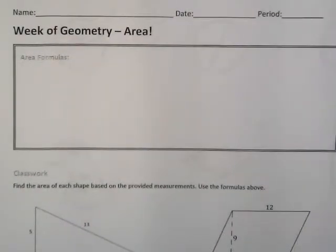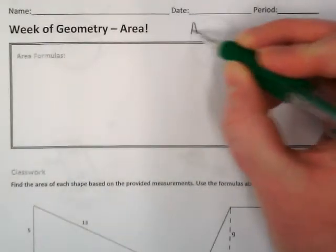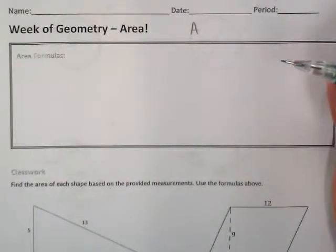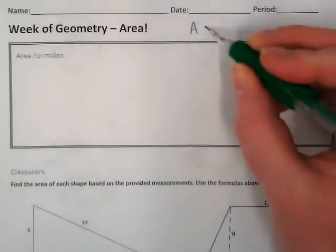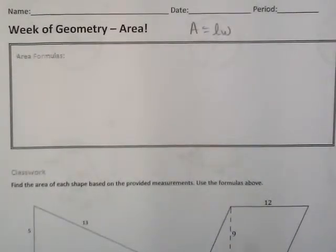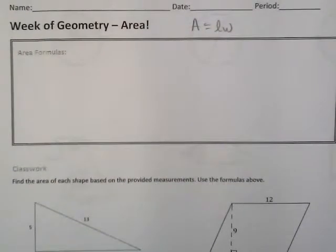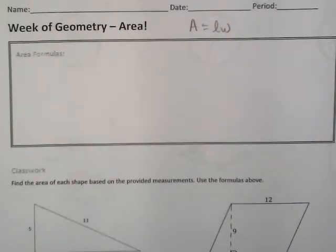The first area formula you probably learned in elementary school is A equals length times width. Today we're looking at some shapes that are related to length times width, except for the circle, which is completely different.